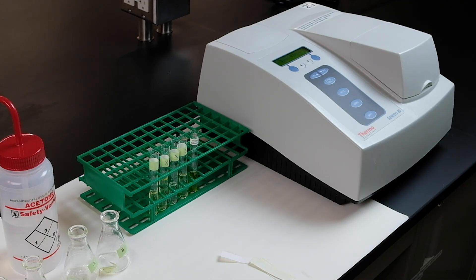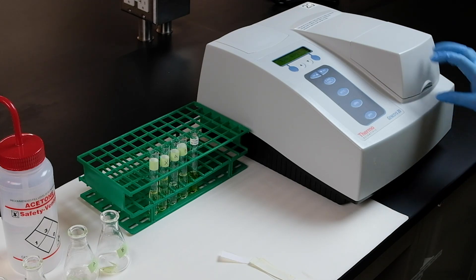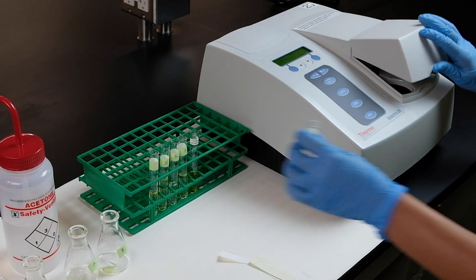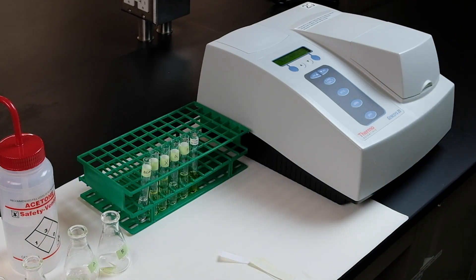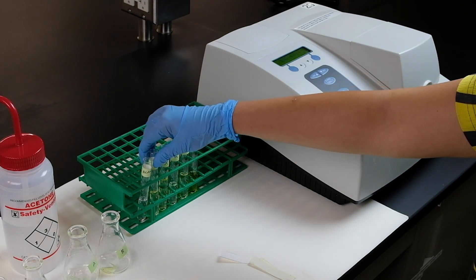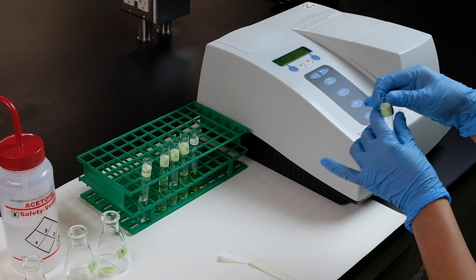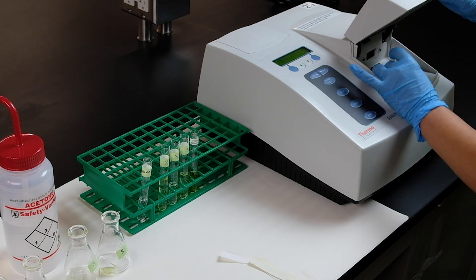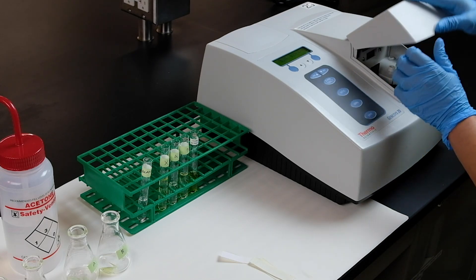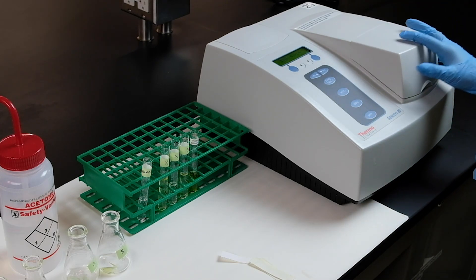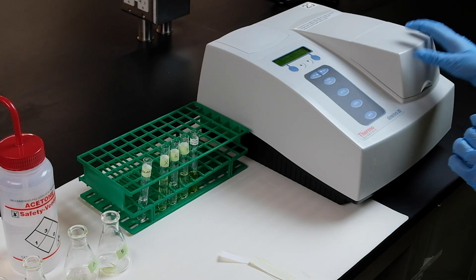At that time, your spec machine will show the value of 0, which means you blanked successfully. Starting with a wavelength of 380 nanometers, start recording each of the readings of each of your pigments. Start with carotene. Record now the absorbance values that the spec machine gives you.